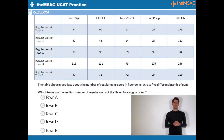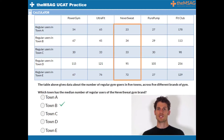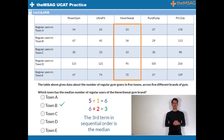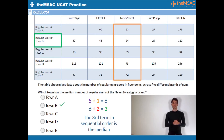For question 4, the answer is B. There are five terms in the set for Never Sweat. Therefore, the middle term will be 5 plus 1 divided by 2, and therefore the third term. Counting from the smallest, which is 23, then the second smallest, which is 33, and now the third smallest, 34 — this term is found for Town B, and so Town B has the median number of regular users of the Never Sweat gym brand.